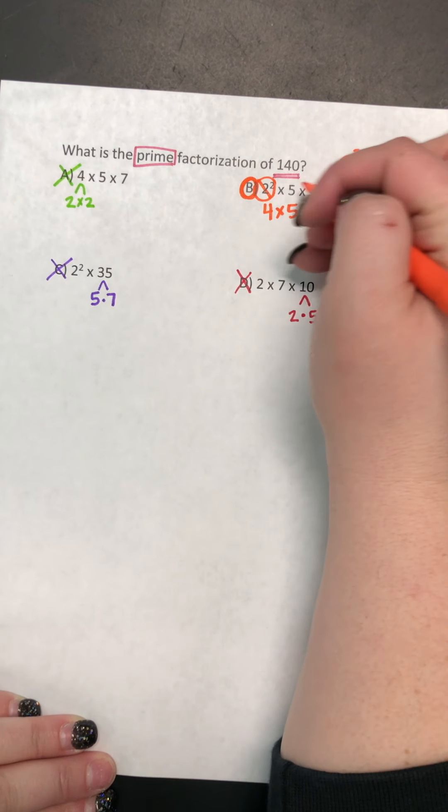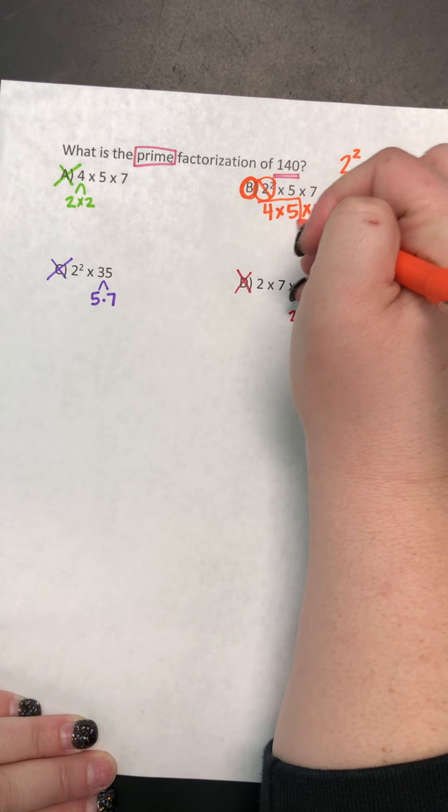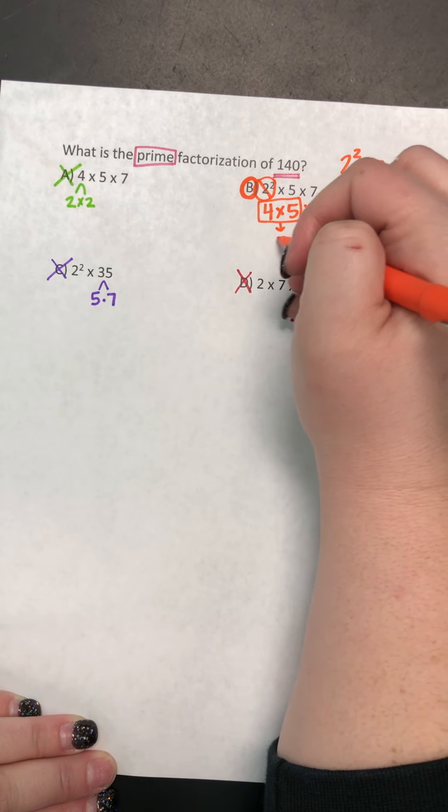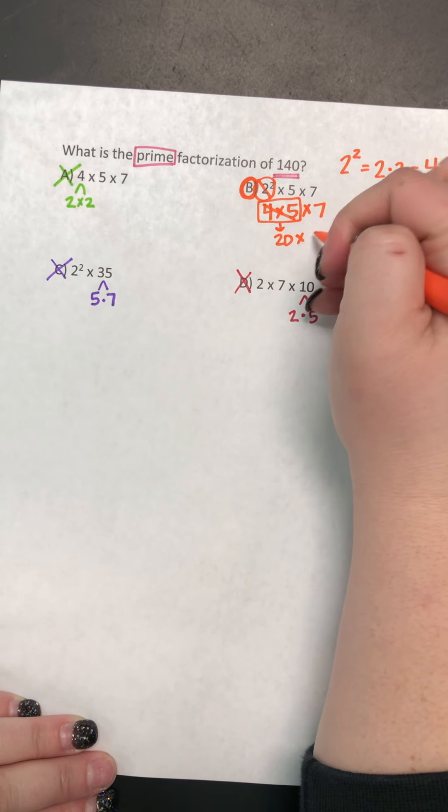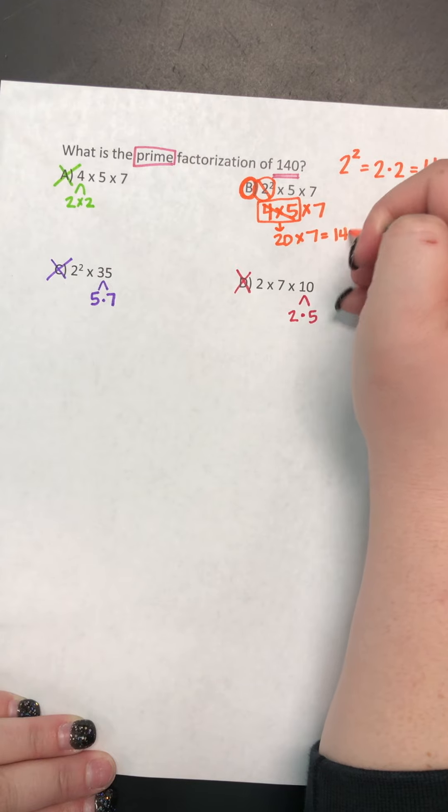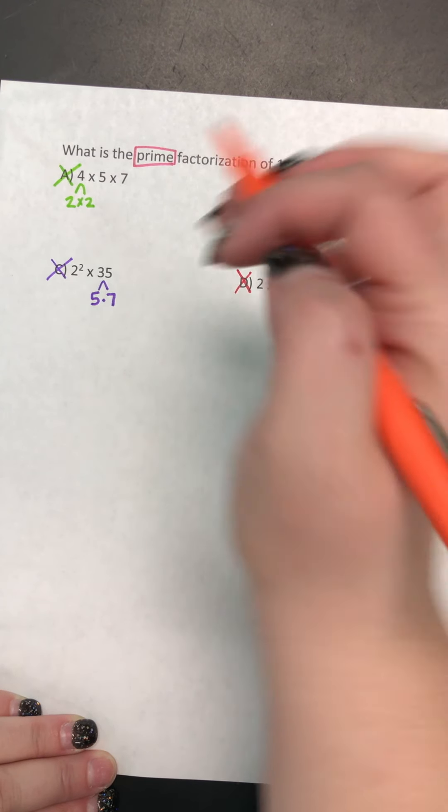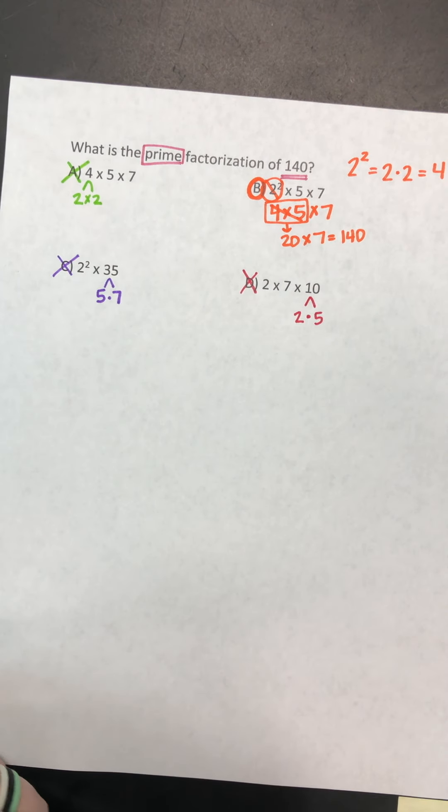So now I can multiply. I remember we're multiplying left to right. So I box my first one. 4 times 5 is 20. Mark it out. Bring down the rest of my problem. 20 times 7 is 140. That is the answer we were looking for, and it used all prime numbers. So B is the best answer choice.